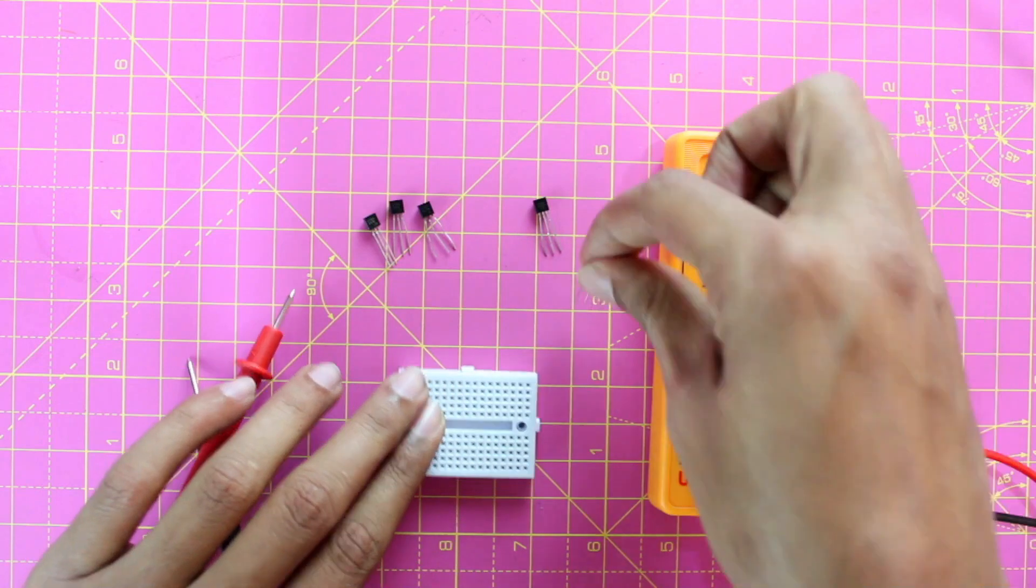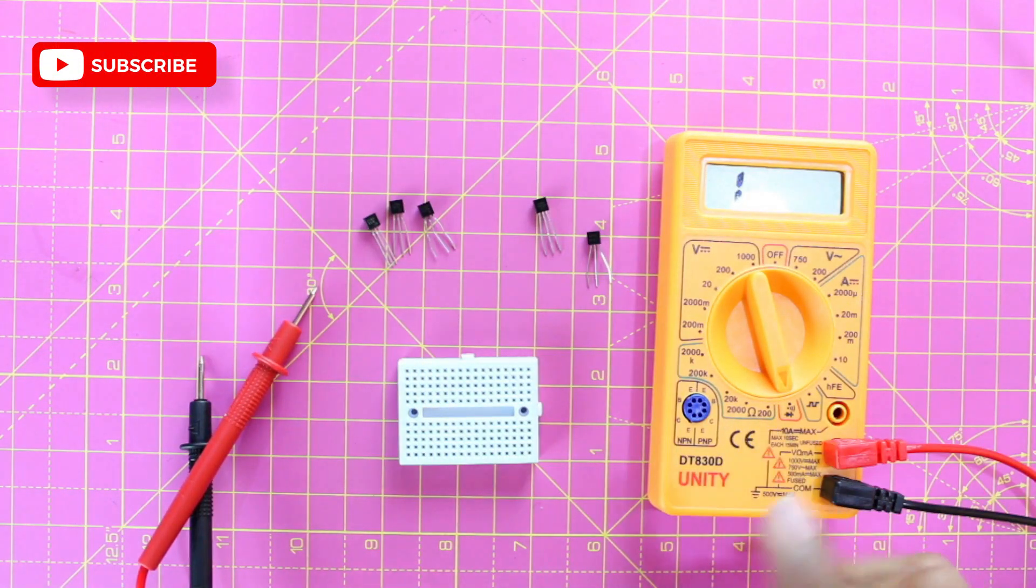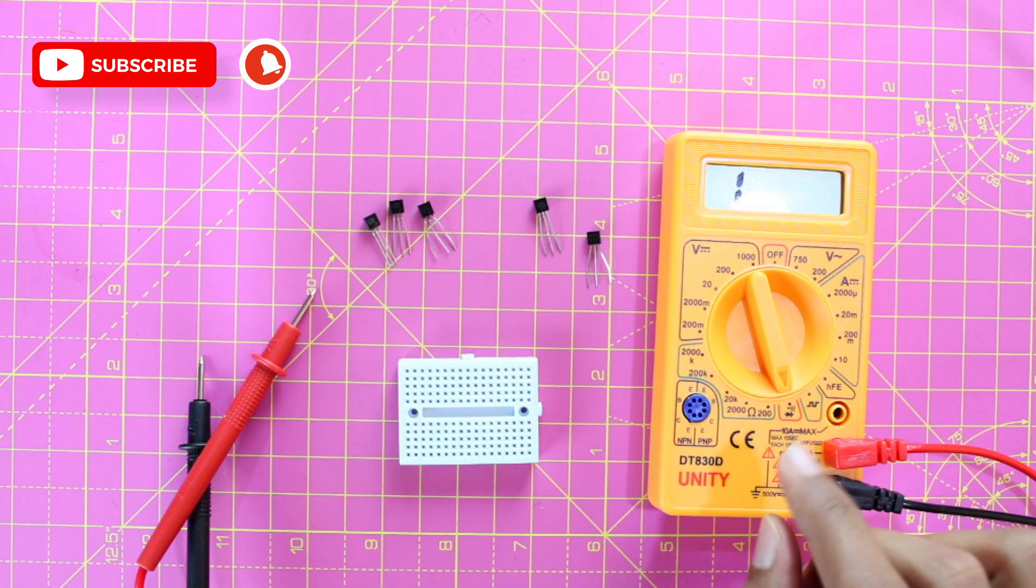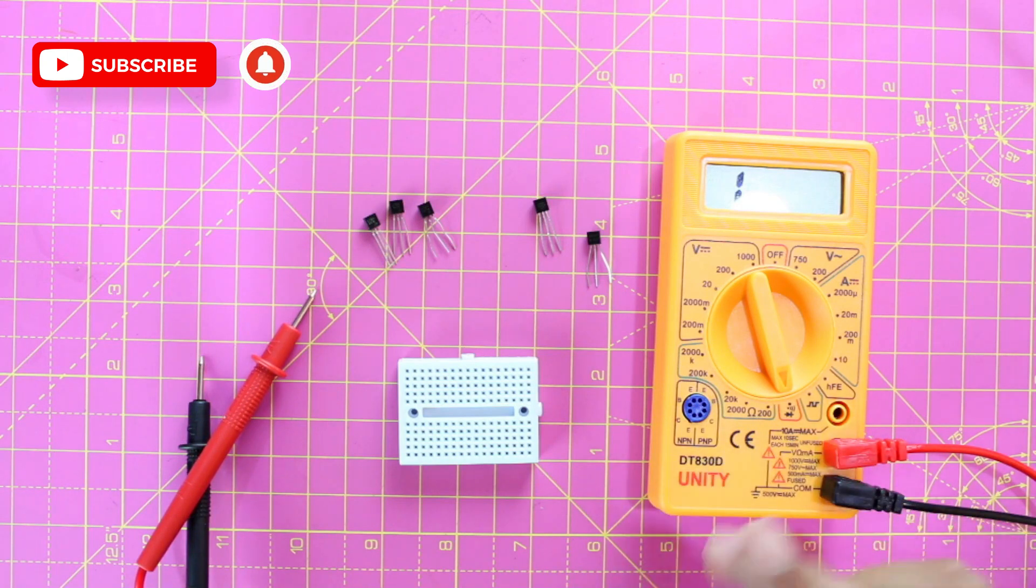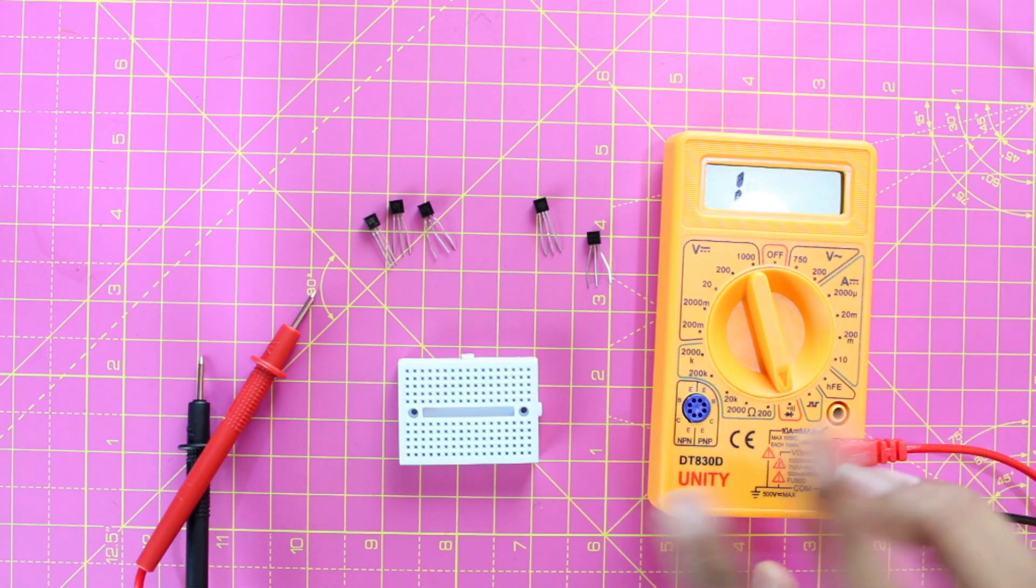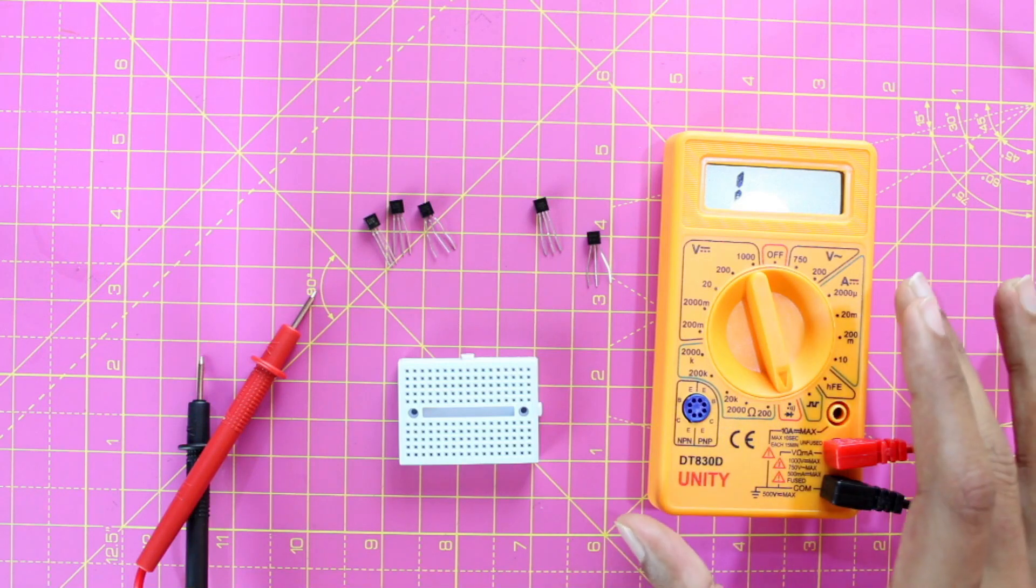So this is how you can test if a transistor is working using a simple multimeter. If you're not getting voltage drop on both the pins, it means your transistor is not working—even if there is no voltage drop between any two of the pins, it also means the transistor is not working.